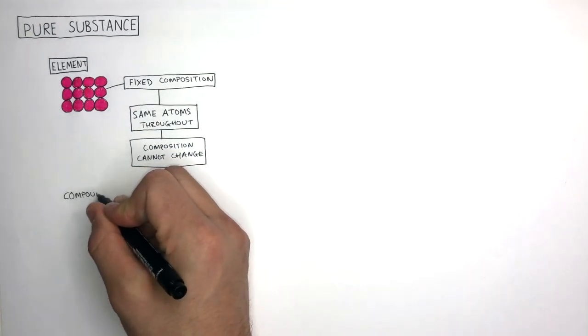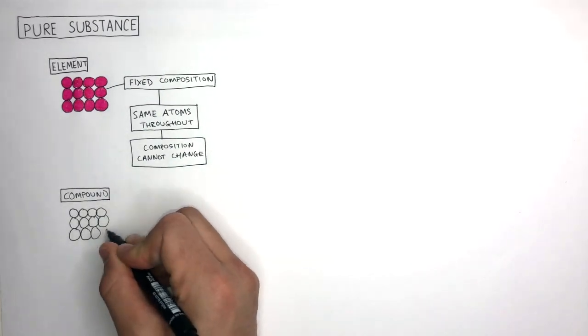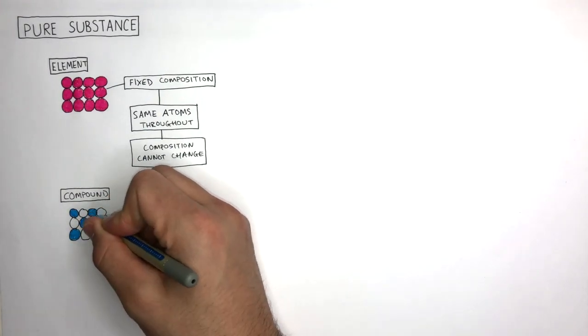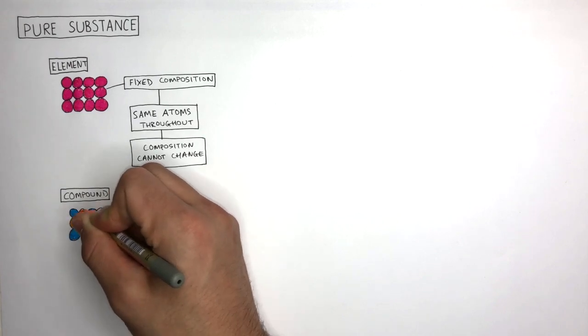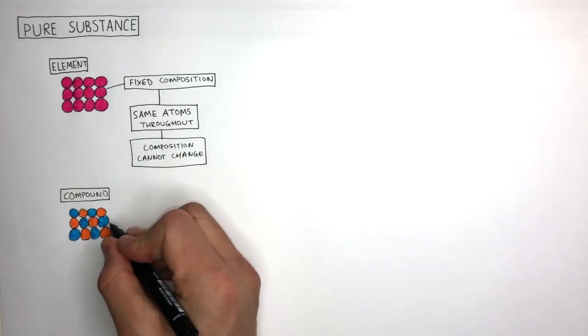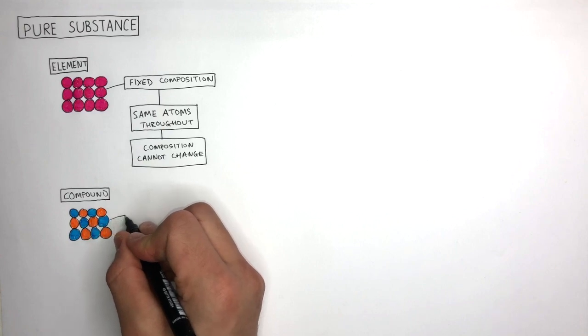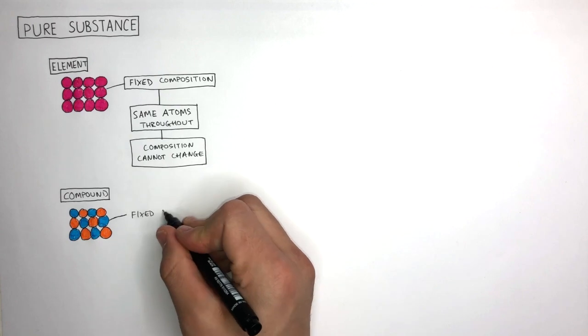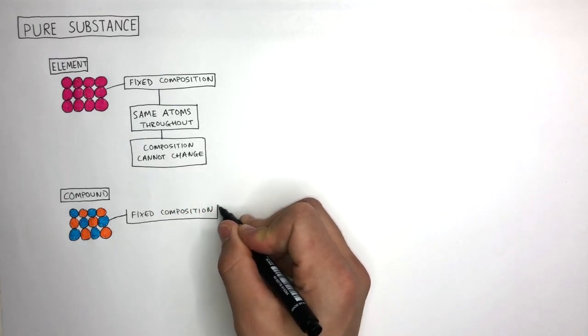A compound is made up of different elements chemically bonded, as shown by the different coloured circles in this particle diagram. Although the elements are different, there is a repeating pattern of where these elements are found. This means there is a fixed composition, even in compounds as well.